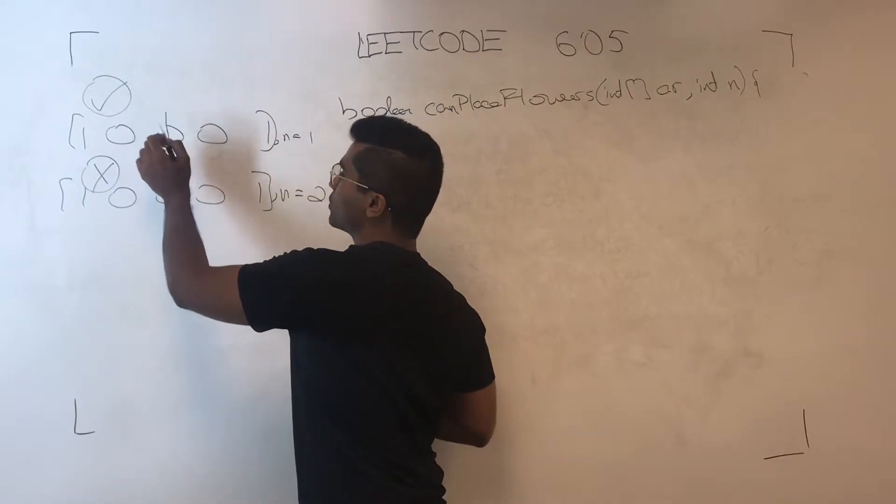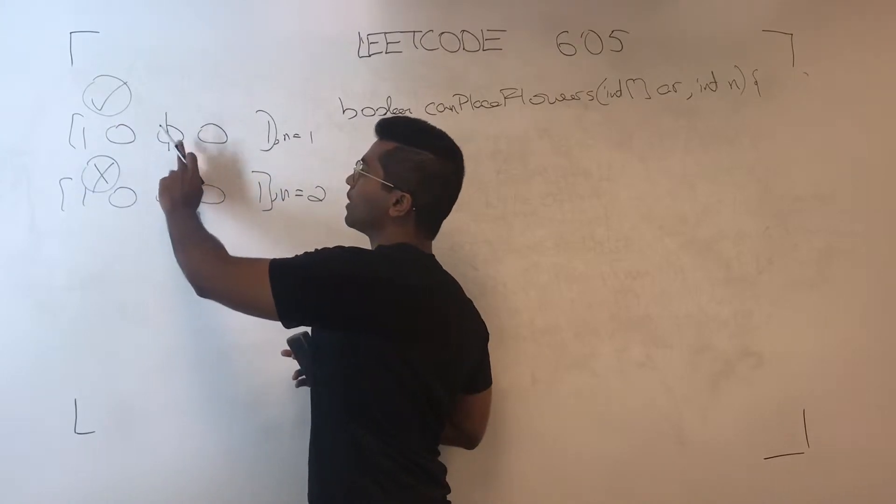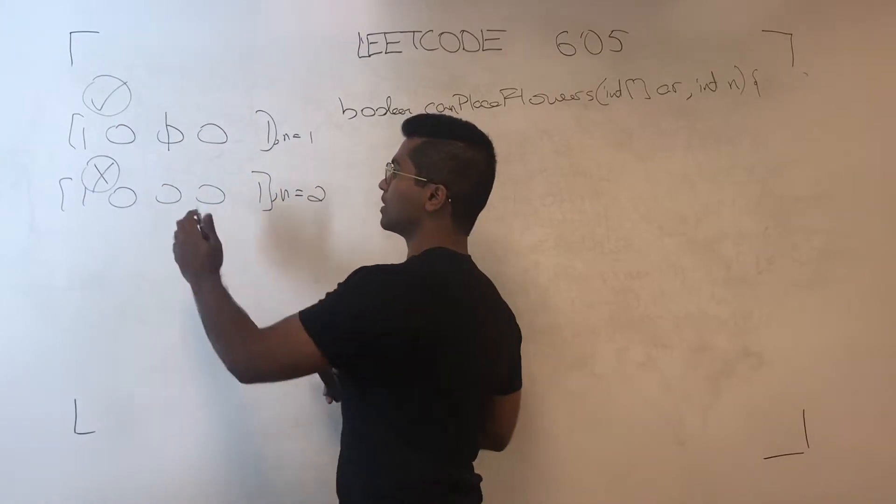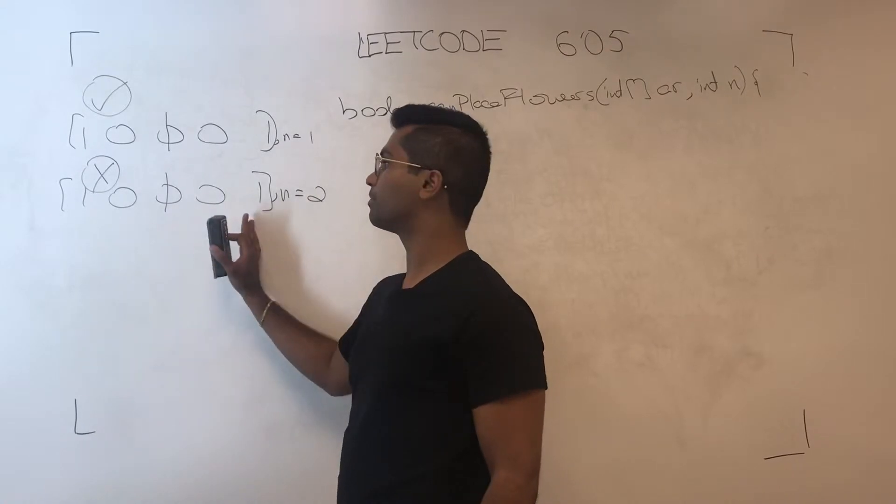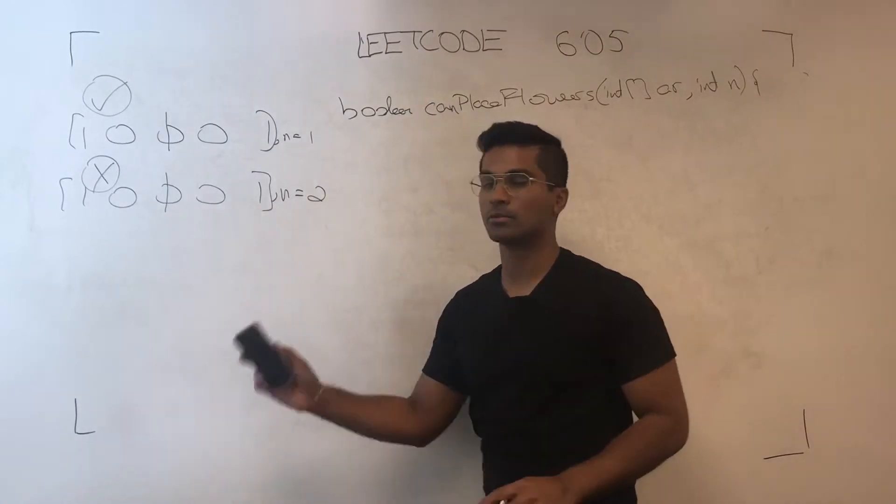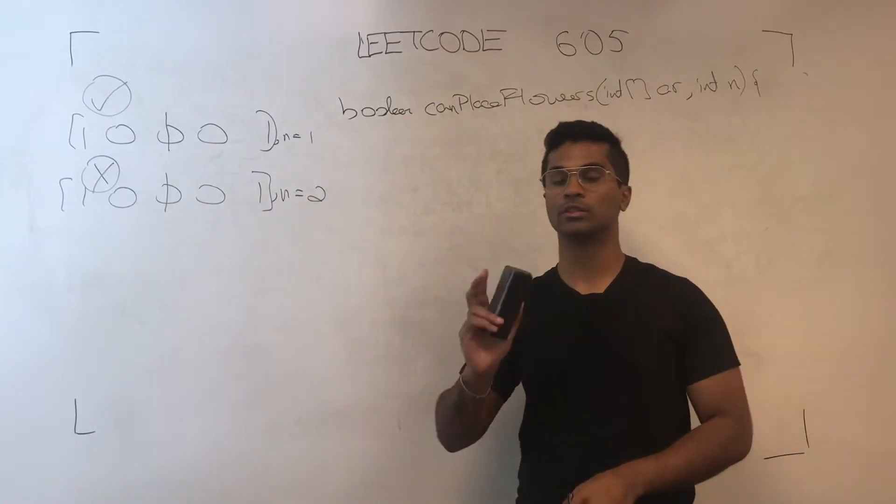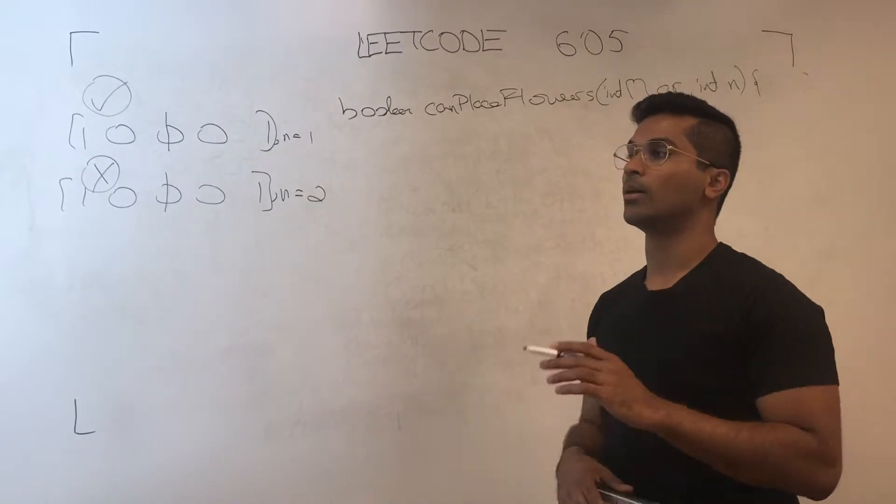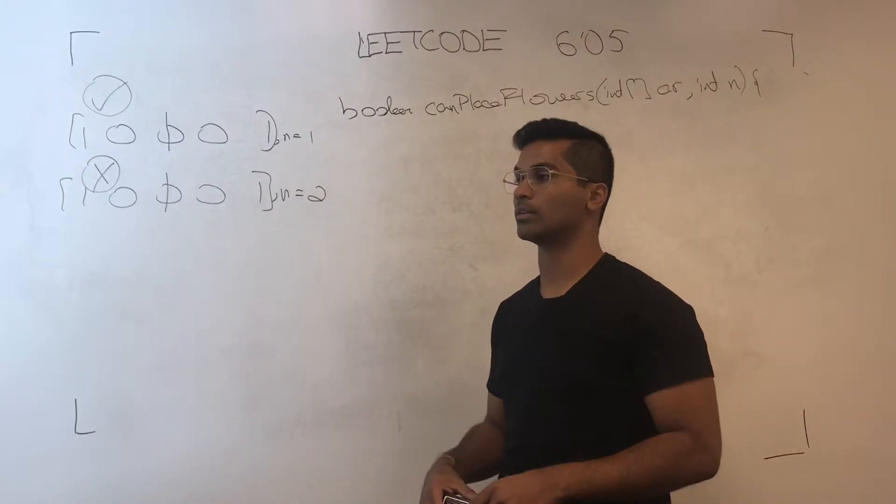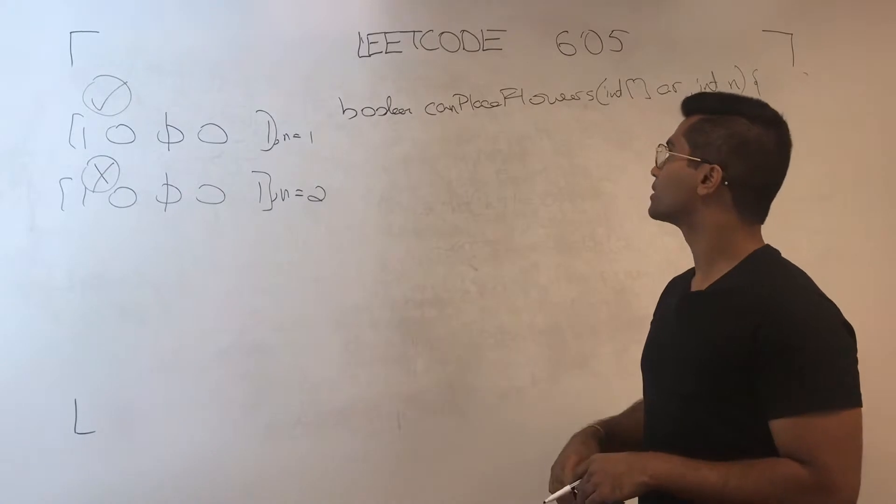So this one will be true because we can put one flower here. This one will be false because after we put one, we can't plant any more. Now this solution I'm going to go over comes from the LeetCode solution tab itself. So you can check that out. I want to just go over it and understand a little bit better and explain it.